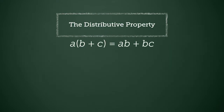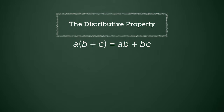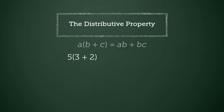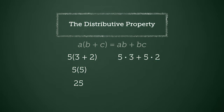The distributive property states that addends that are added and then multiplied by a factor are equivalent to the sum of the products from multiplying the factor by each addend individually. For example, 3 plus 2 can be added first as the parentheses indicate, and the sum multiplied by 5 to get 25. Or, 5 can first be multiplied with 3 and then with 2, resulting in 15 plus 10, and the two products added to get 25. The answers are equivalent.